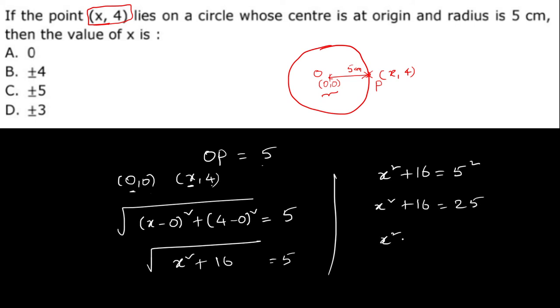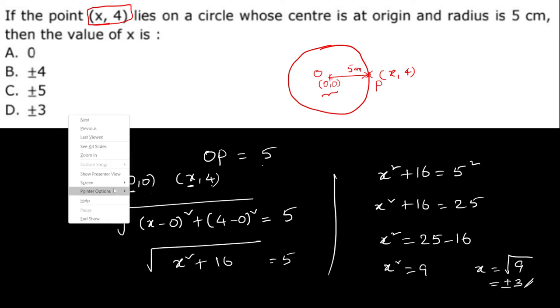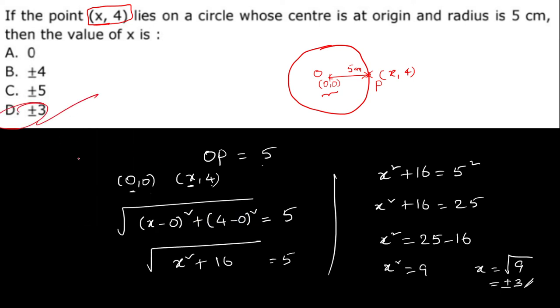25. x square equals 25 minus 16, x square equals 9, x equals root of 9, which is plus or minus 3. So option D is the correct answer. Simple question.